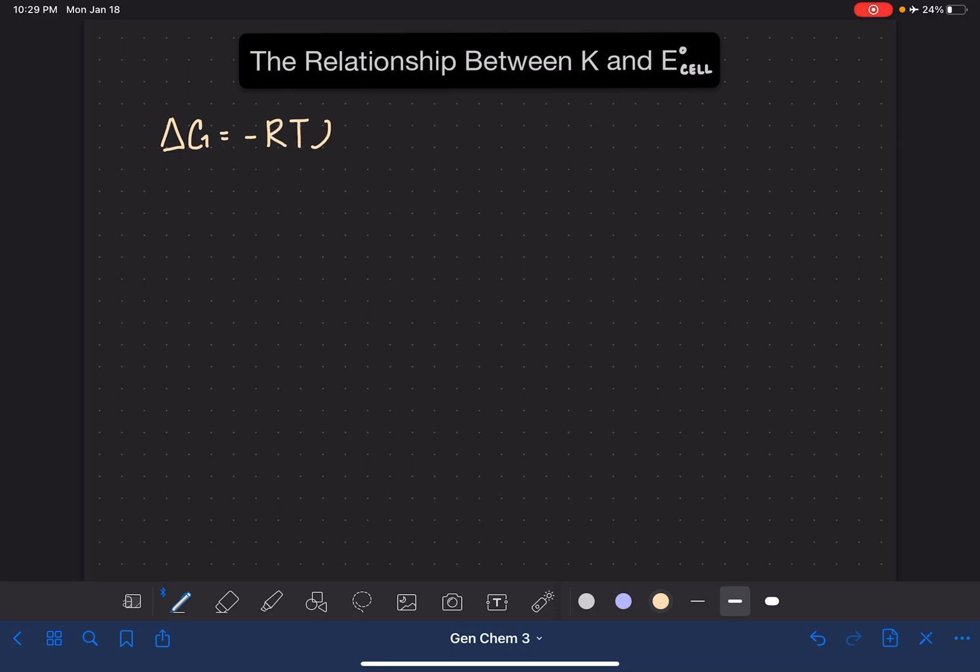Delta G equals negative RT times the natural log of the equilibrium constant K. In this equation, R is a constant, the gas constant, T is temperature, and K is the equilibrium constant.